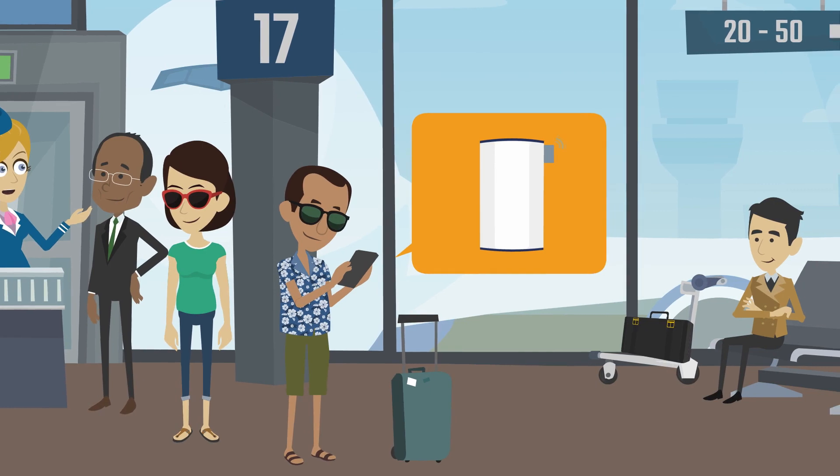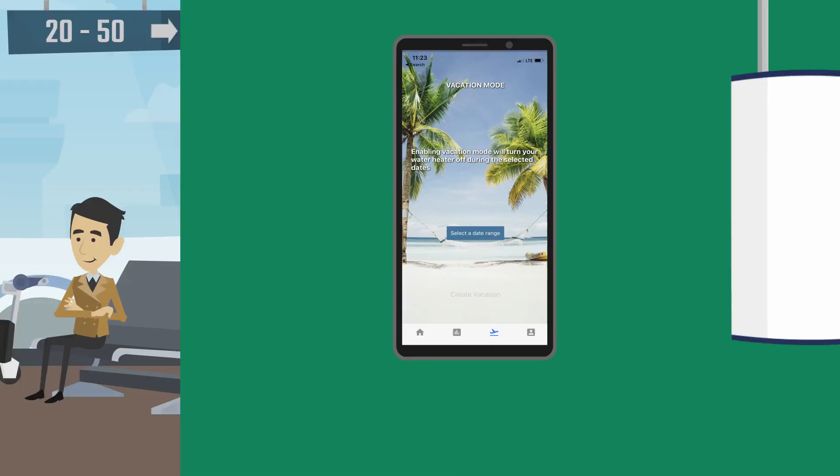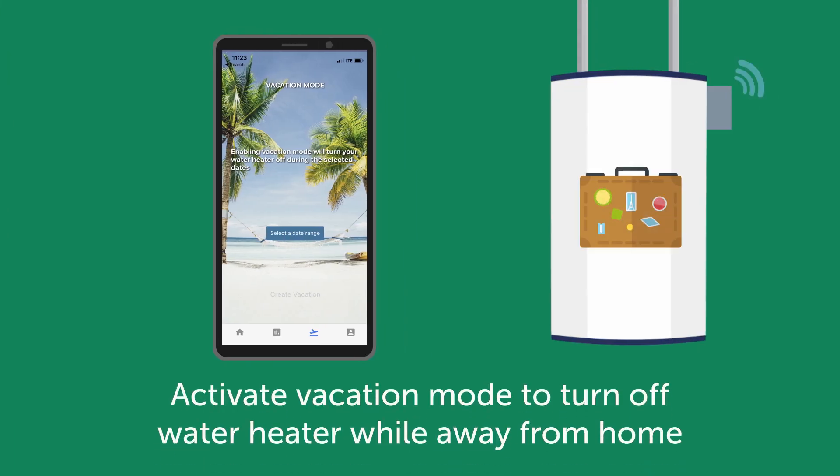The app's vacation mode setting also allows you to remotely turn off your water heater while you're out of the house.